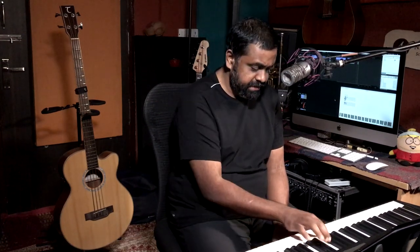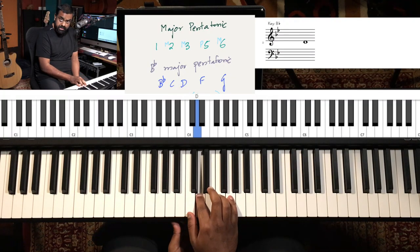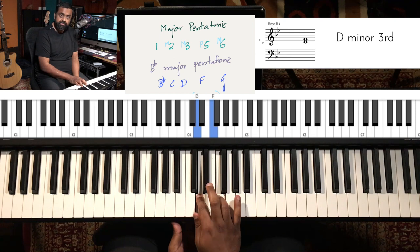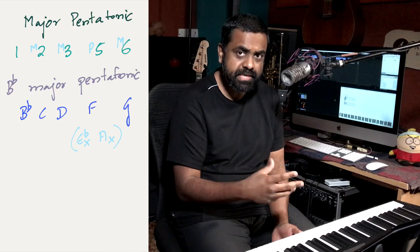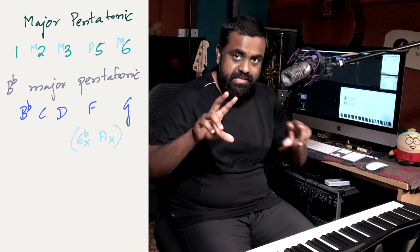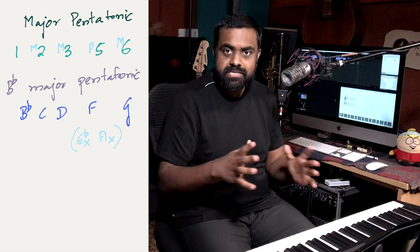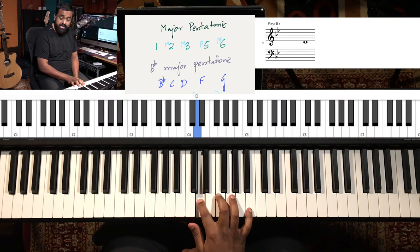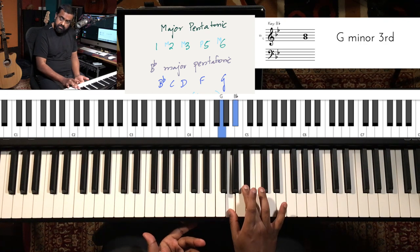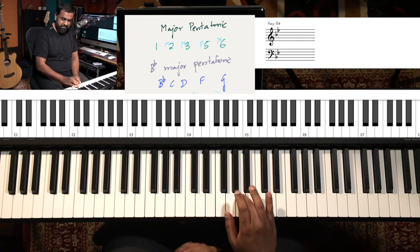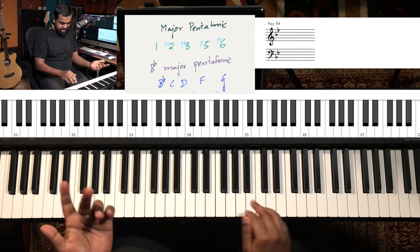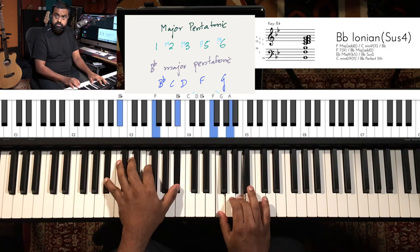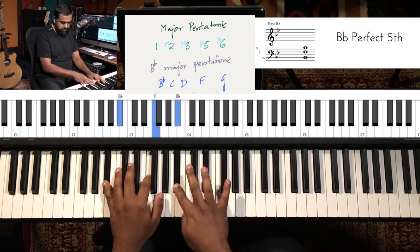We have two flavors: a major pentatonic flavor and a minor pentatonic flavor. If I'm in the key of B♭ major, to build a pentatonic scale it's nothing but the root, the second, the major third, the fifth — meaning you skip the fourth. The pentatonic scale essentially hides away the notes which are considered tensions in a scale, so we ignore the four and the seven.